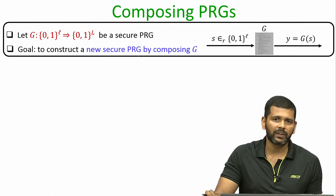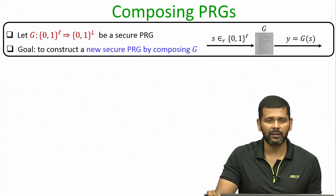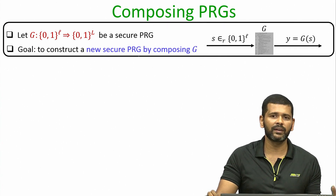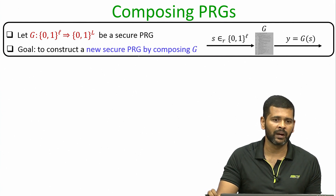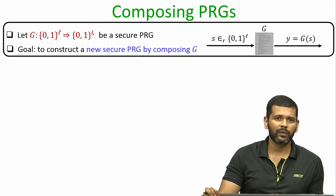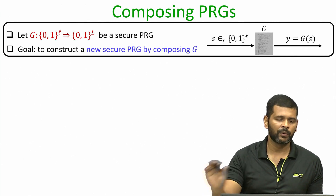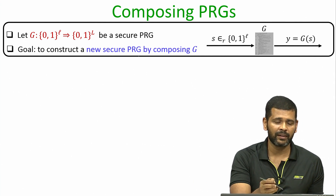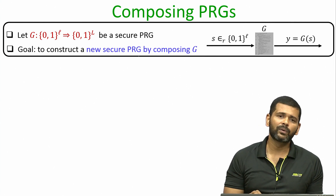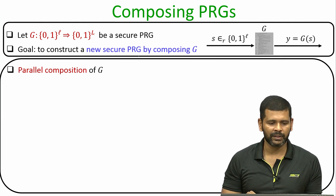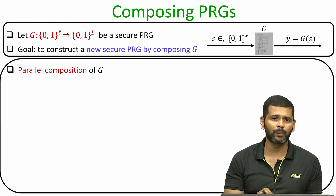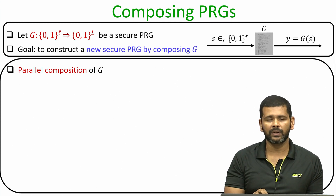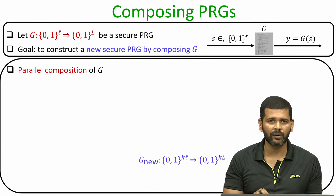Composing PRGs is a very popular operation. By composing PRGs we want to increase the input size and output size of a PRG. Imagine you are given a secure PRG — the algorithm G takes an input of size little l bits and produces an output of size big L bits. Our goal is to compose many independent executions of algorithm G; here we will consider the parallel composition of G, and in future discussion we will also consider the serial composition of G.